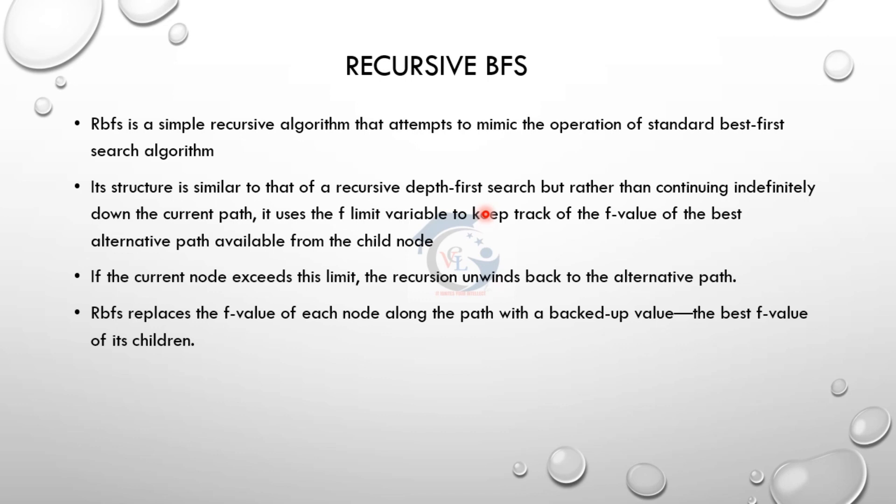In RBFS, we try to choose the parent node and compare f-values. If the parent node's f-value is lower than a set limit, we continue down that path.